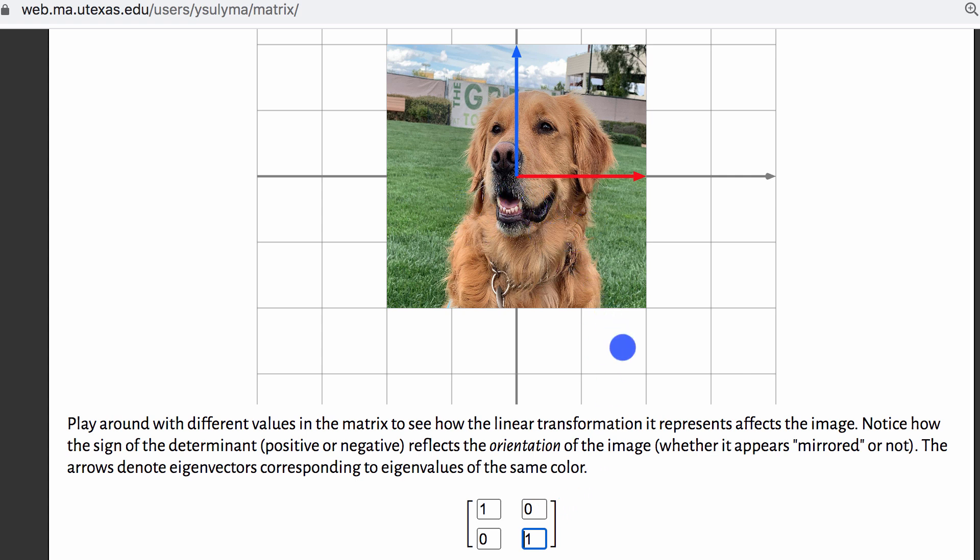Now, what about a dilation? What if we wanted to shrink everything by a factor of two? How do you think we would modify this matrix to do that? Pause this video and think about that.